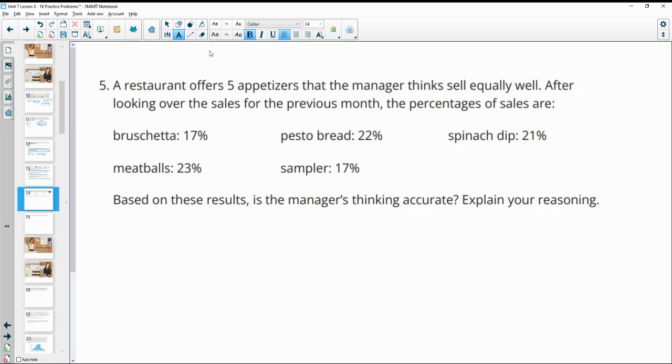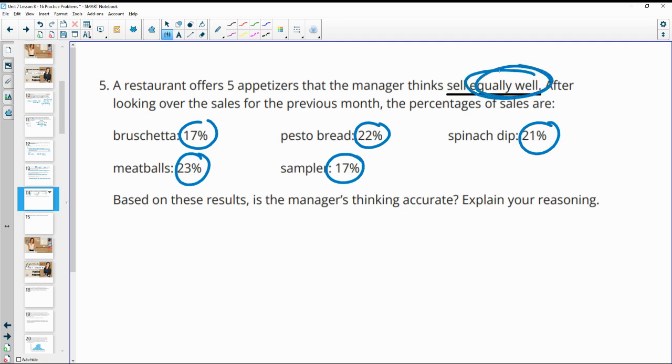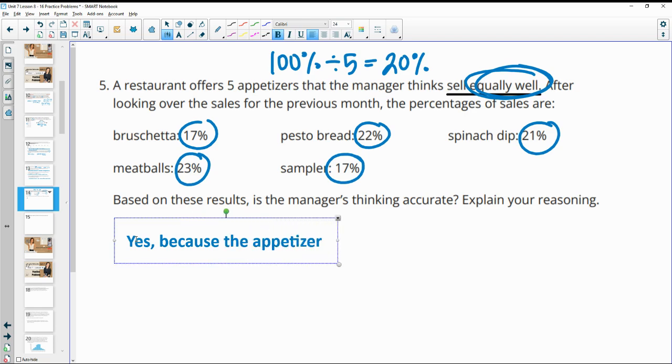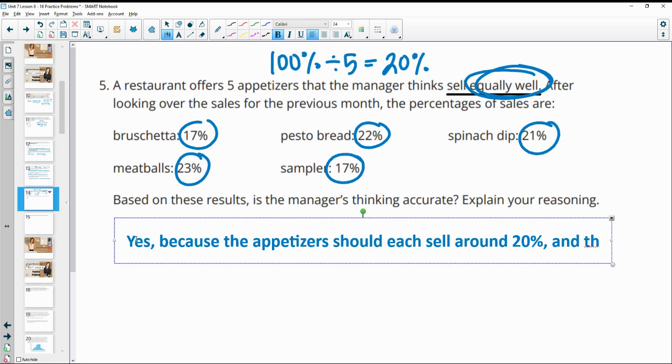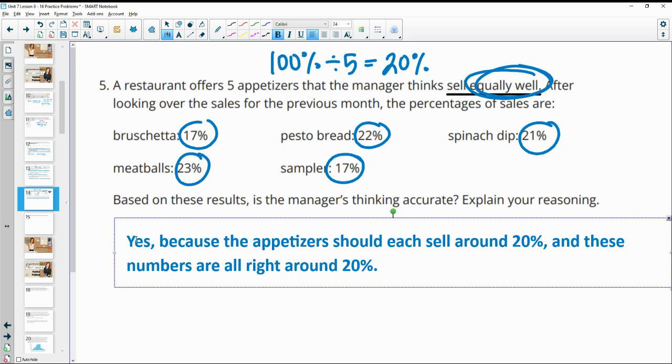Number five, a restaurant offers five appetizers that the manager thinks sell equally well. After looking over the sales for the previous month, the sales are as follows. For each of the appetizers, 17%, 23%, 22%, 17%, 21%. Based on these results, is the manager's thinking accurate that they sell equally well? So 100% divided by five means that each appetizer, if they're selling exactly equally well, would be 20%. And so do these sell equally well? So I would say yes, because the appetizers should each sell around 20%. And all of these numbers are right around 20%.